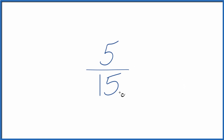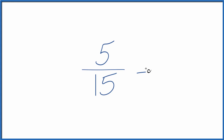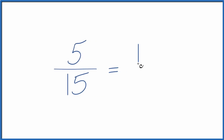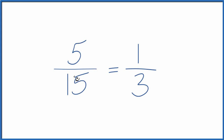For 5/15, let's start by simplifying. Because 5 goes into 15 three times and into itself just once: 5 divided by 5 is 1, and 15 divided by 5 is 3. So 1/3 is an equivalent fraction for 5/15. If you divide 1 by 3 and 5 by 15, you get the same decimal answer.